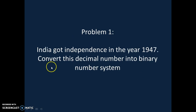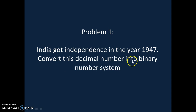Problem 1. India got independence in the year 1947. Convert this decimal number into binary number system. To do this conversion we will require a table which will have three columns.